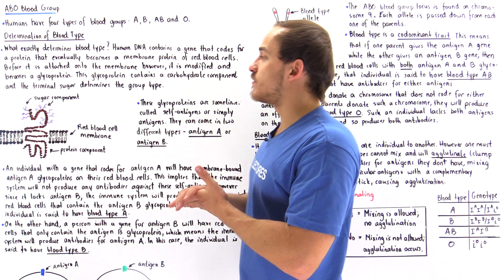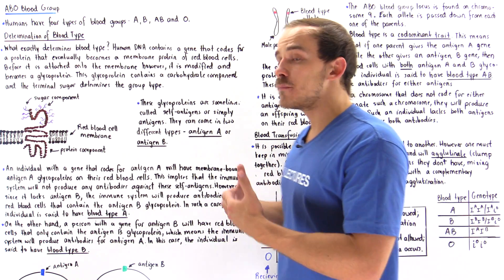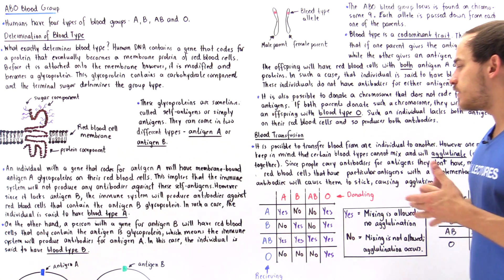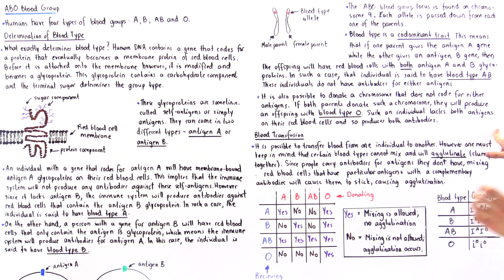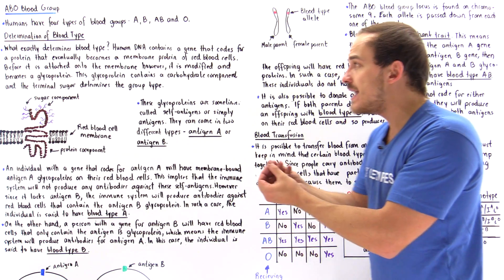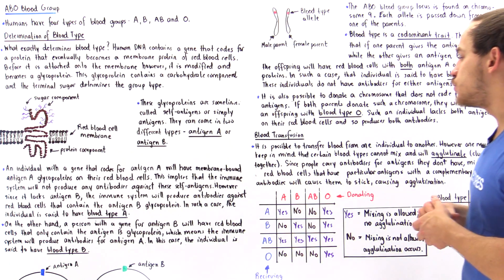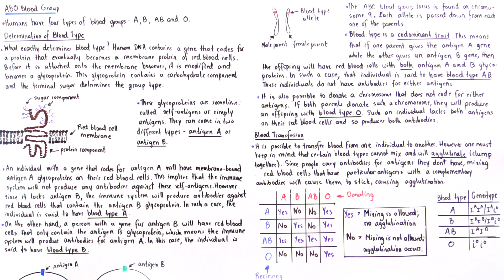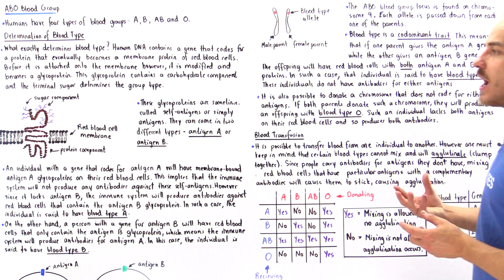Now that we've discussed the four different blood types, let's discuss the process of blood transfusion. It is actually possible to transfer blood from one individual to a different individual. However, one must keep in mind that certain blood types cannot be mixed, because if they are mixed they will agglutinate — antibodies will combine with their complementary antigens, clump together, and the blood will be rejected during that transfusion process. This is because people carry antibodies for antigens they don't have, and mixing red blood cells that have particular antigens with complementary antibodies will cause them to stick together, causing agglutination.